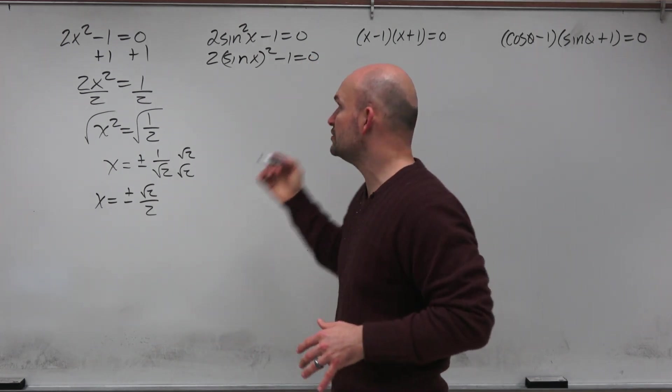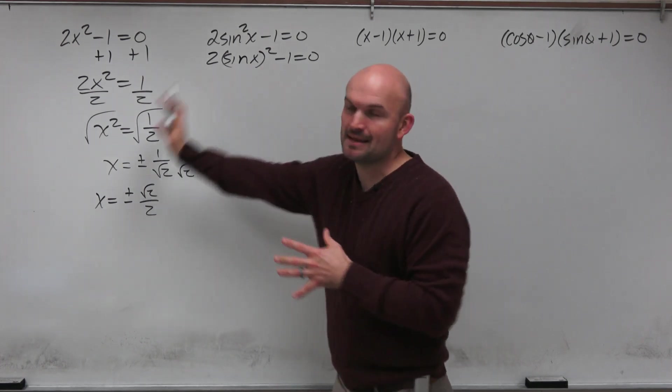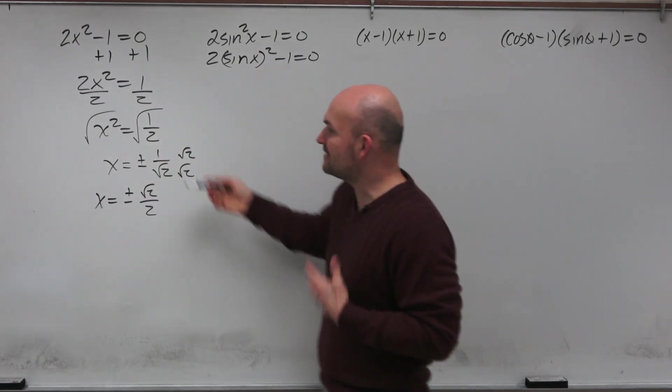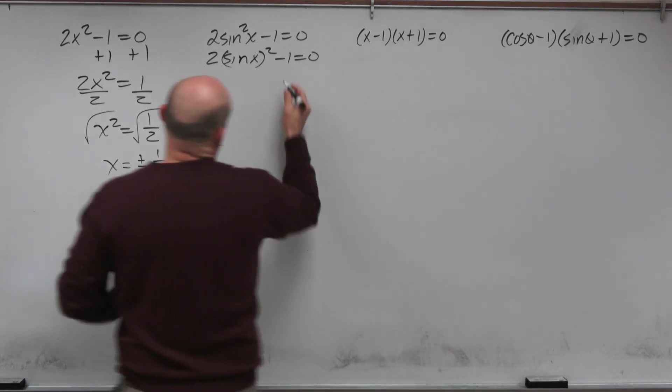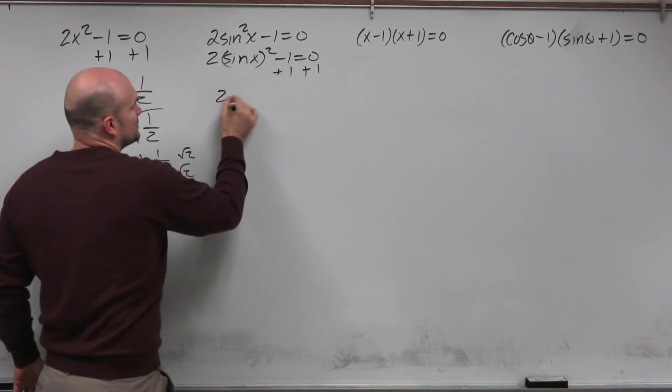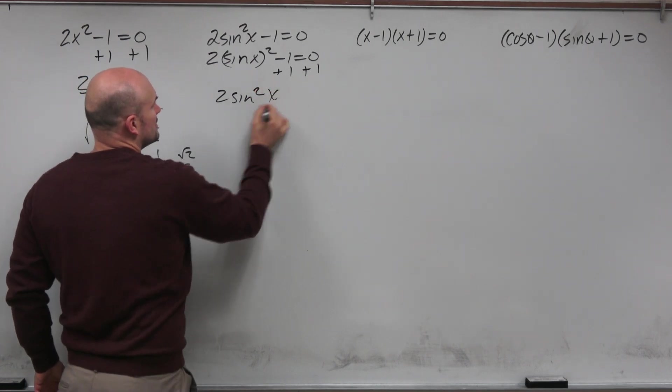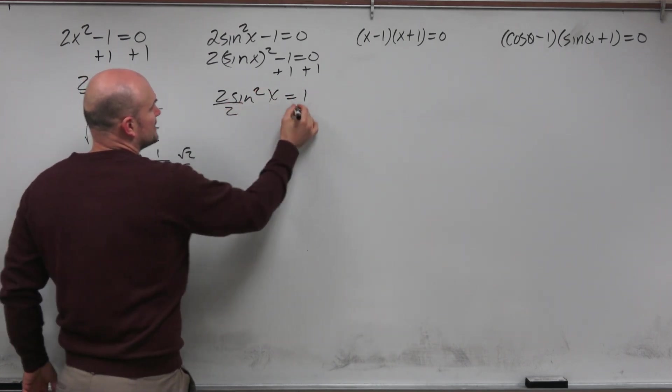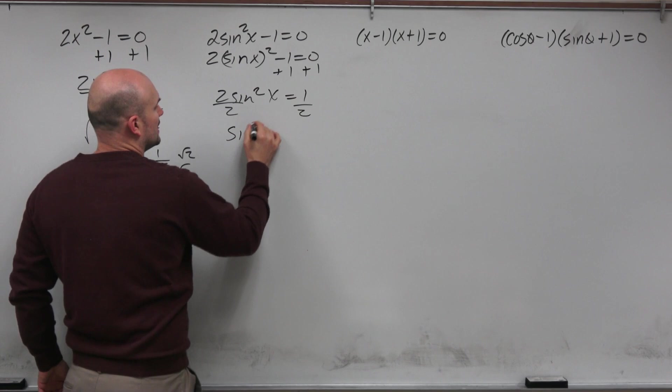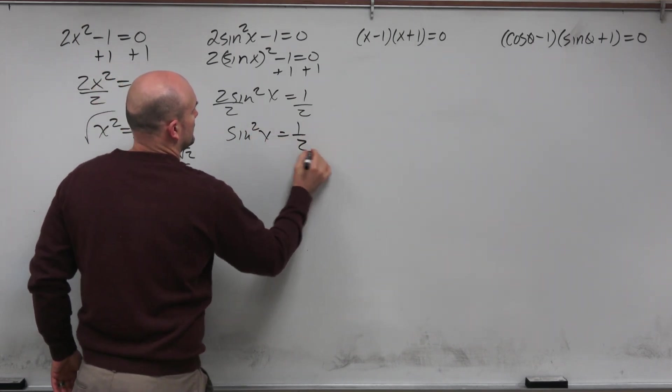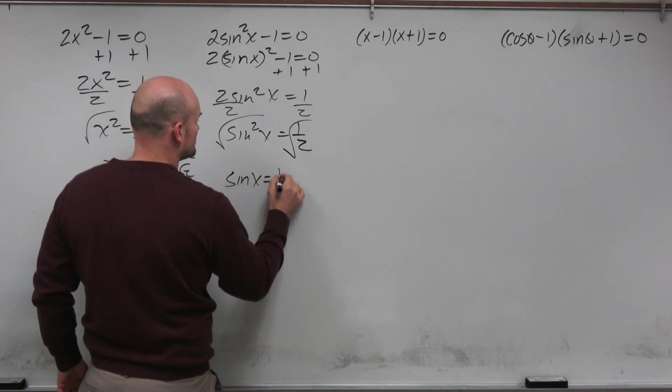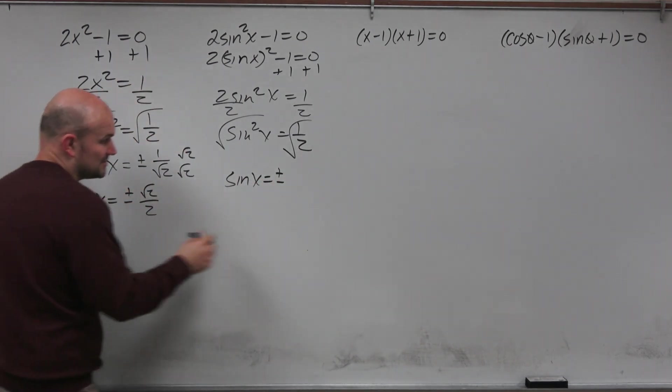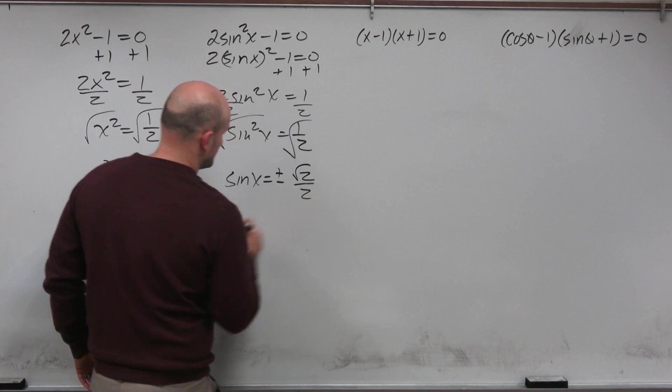So again, the nice thing is you're just going to do the same thing. You're applying the same inverse operations. We're going to try, instead of isolating the x, now we're going to try to isolate the sine of x. So we're just going to use our inverse operations in the same exact manner that we did for the x. Then you introduce the square root, and you get sine of x equals plus or minus. We can just use this answer now, square root of 2 over 2.